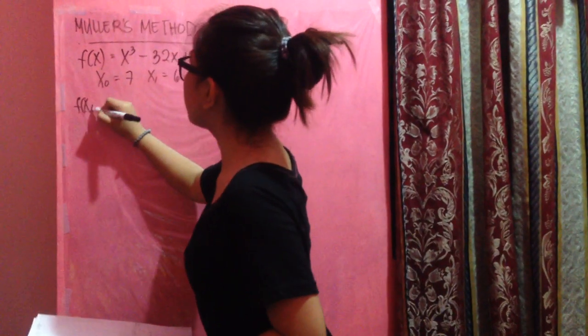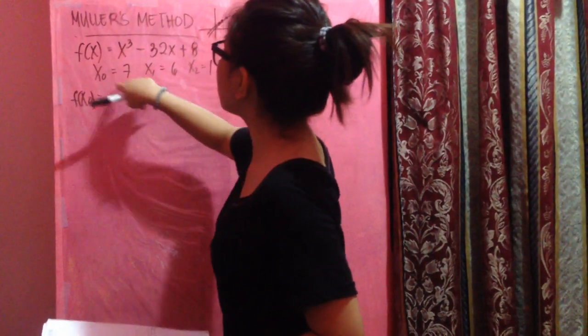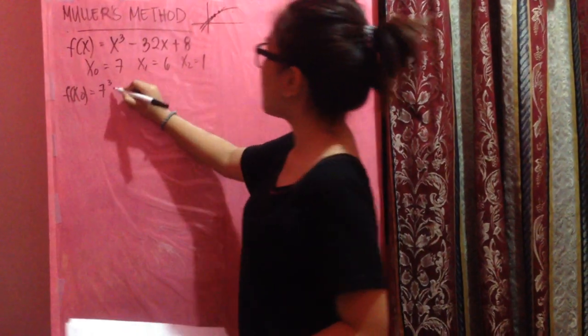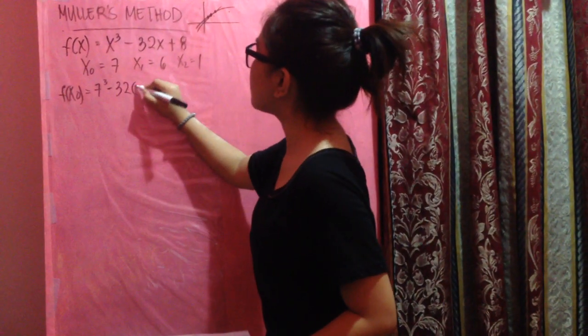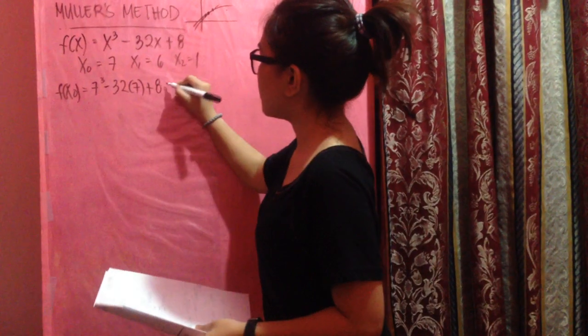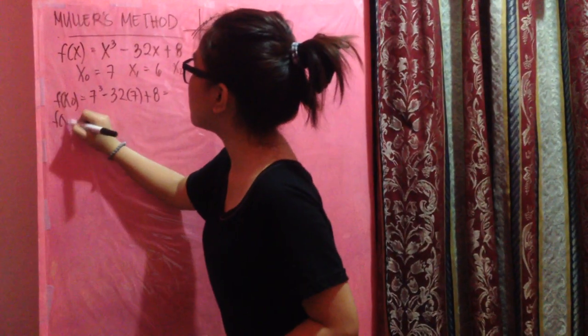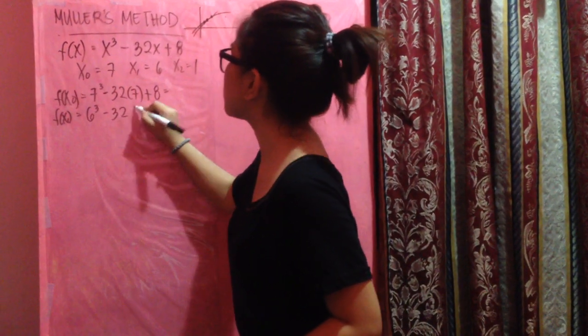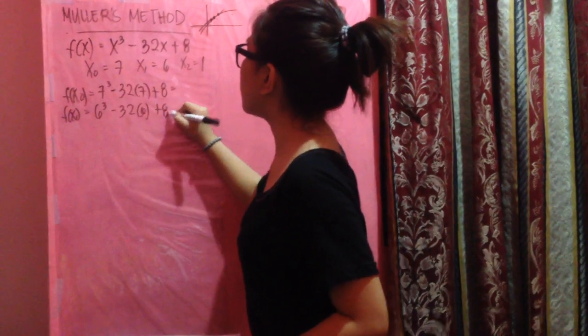For the f(x₀), we have to substitute this x₀ to the function of x. So, 7 cubed minus 32 times 7 plus 8. For the f(x₁), substitute 6 to the function: 6 cubed minus 32 times 6 plus 8.